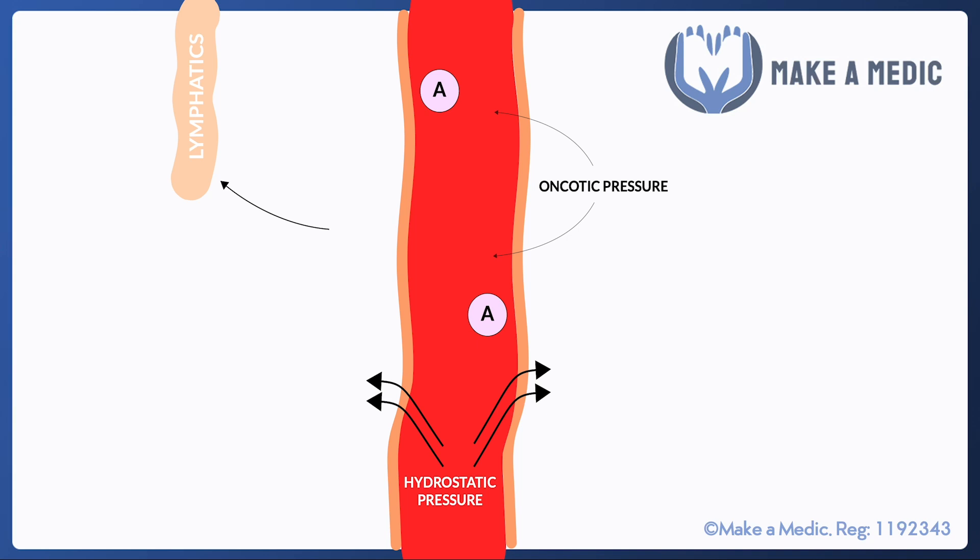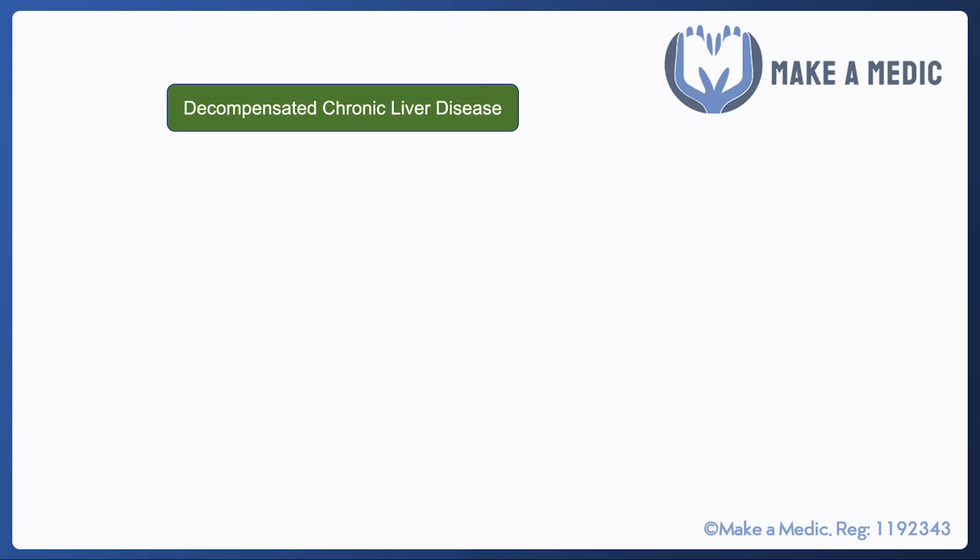So given that hydrostatic pressure has increased and oncotic pressure has decreased, there is a net movement of fluid into the interstitium. This overwhelms the ability of the lymphatics to deal with it, and this is why patients with chronic liver disease end up edematous.